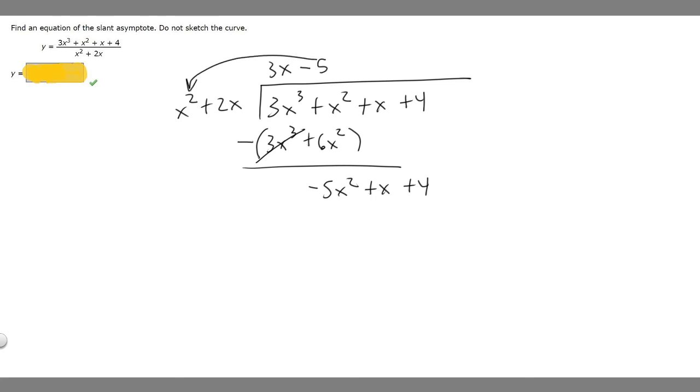And then we're going to multiply x squared and 2x by minus 5 and then subtract. So minus 5 times x squared is minus 5x squared. Then we're subtracting this whole thing. And then minus 5 times 2x is minus 10x.